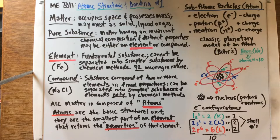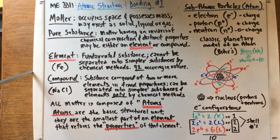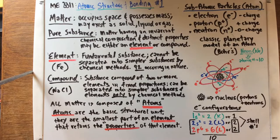Matter generally occupies space, possesses mass, and can exist as a solid, liquid, or gas. It can be broken down into either a pure substance or a mixture, but we'll emphasize pure substances. A pure substance is matter having an invariant chemical composition — meaning it doesn't change — and has distinct properties. It can be either an element or a compound.